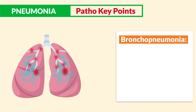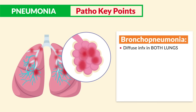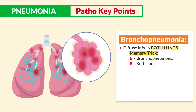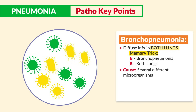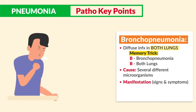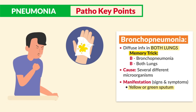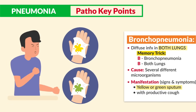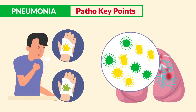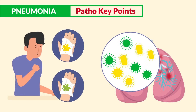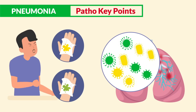Moving on to bronchopneumonia — this is a diffuse infection in both lungs. The key term is both lungs, and this is the key difference from lobar pneumonia. Memory trick: think B for bronchopneumonia as B for both lungs affected. The key manifestation is yellow or green sputum with a productive cough, due to the presence of multiple microorganisms affecting the lungs.